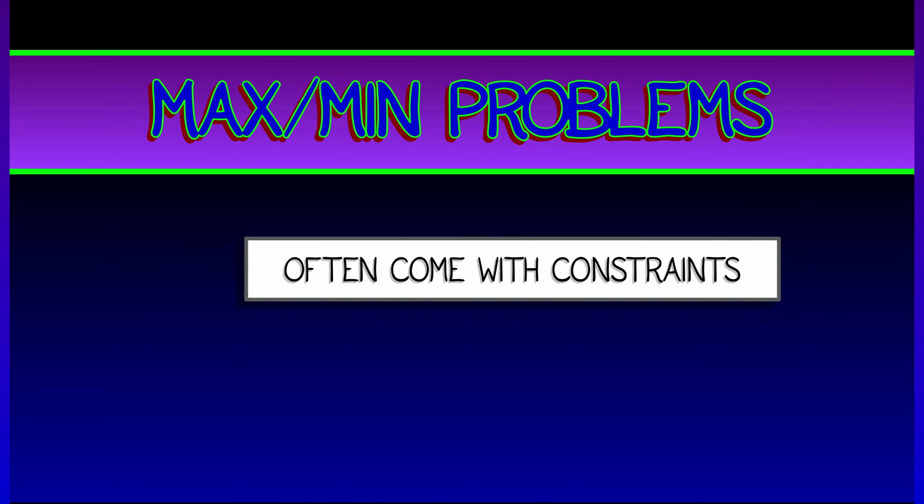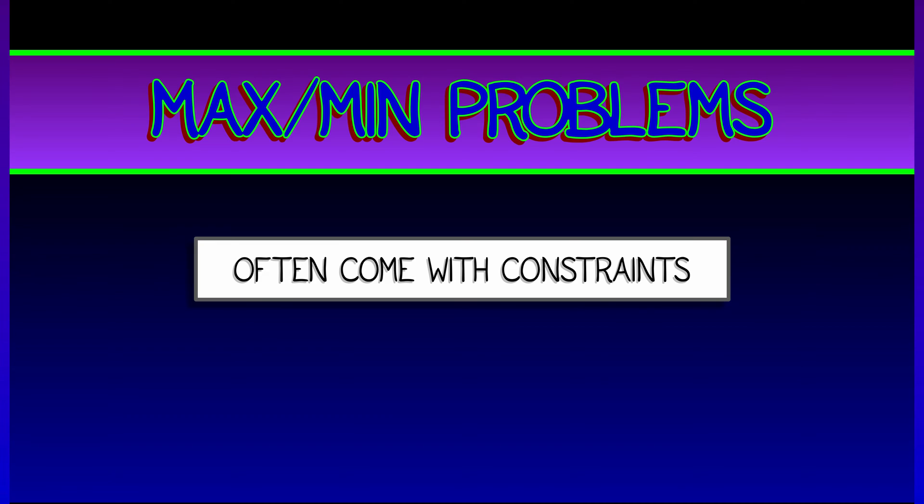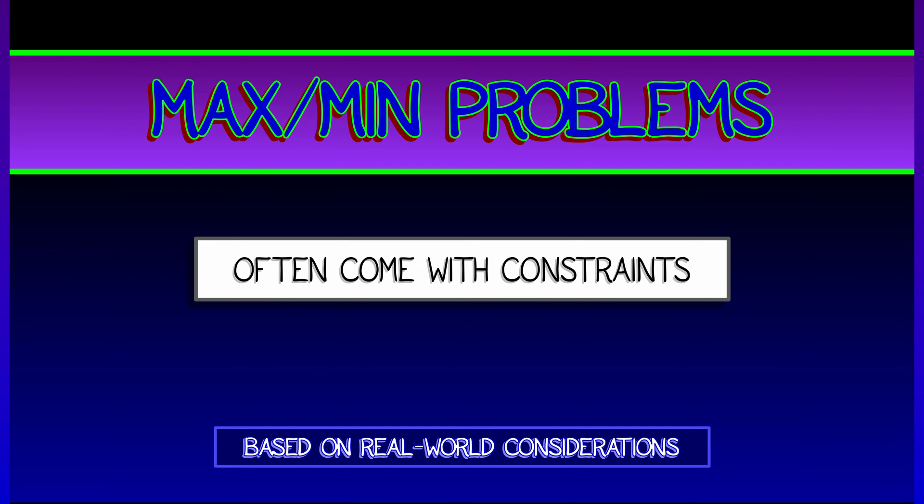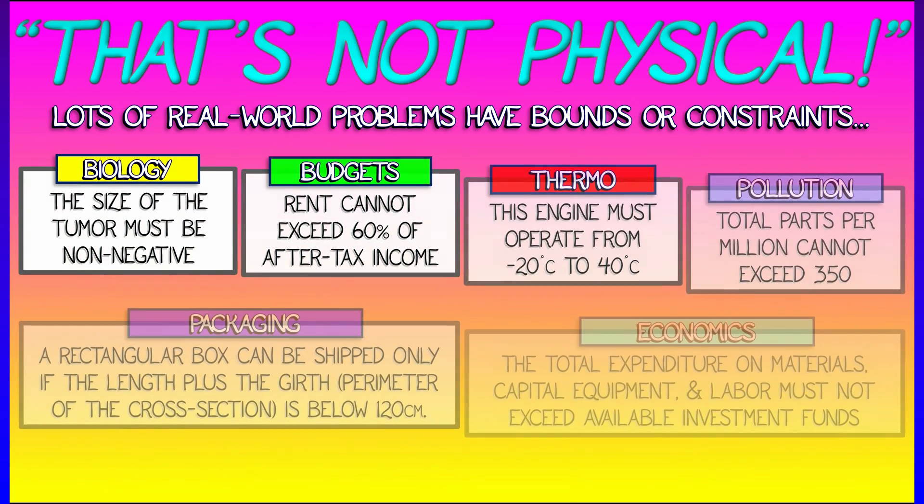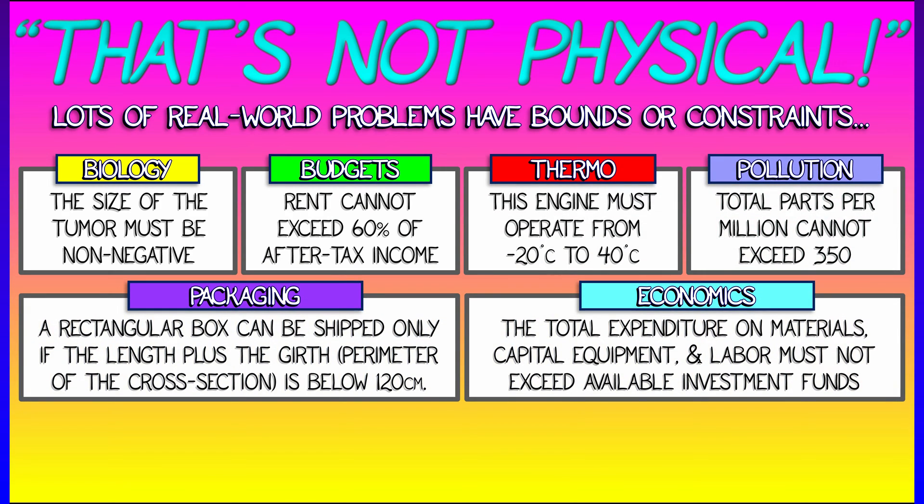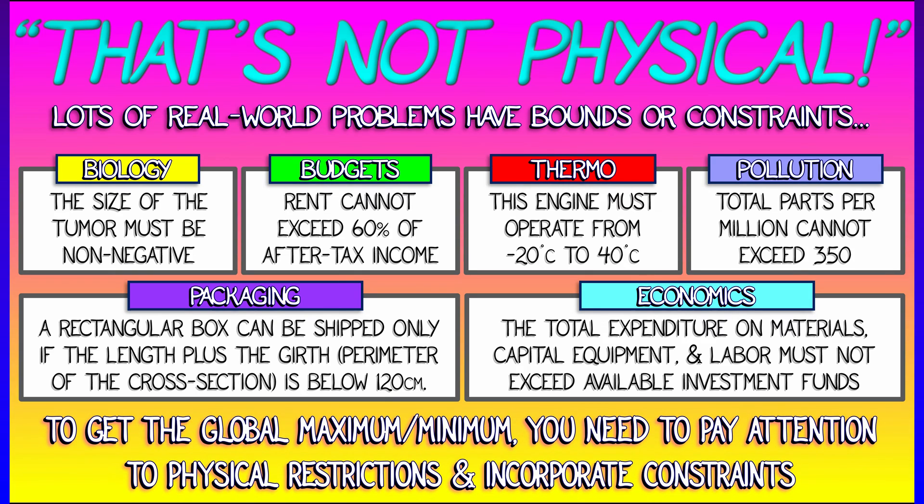As it happens, max-min problems often come with constraints based on real-world considerations. Many times you get a solution and you rule it out because it's not physical. What that actually means depends on the domain in which you're working. Maybe it's something from physics, biology, or economics. You only have a finite amount of money to spend on these commodities. No matter what the application domain is, it's common to have a constraint where you have to take into consideration certain bounds.